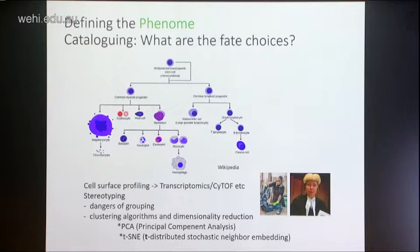There are dangers with stereotyping — you might be wrong that your markers actually cover two different sorts of fate decisions, not just one. We really have to be very careful about assuming from particular markers that we can judge the behaviour of a group.